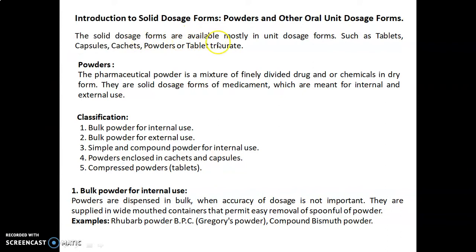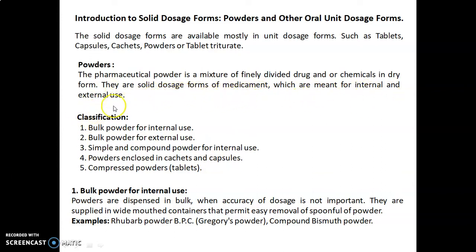The solid dosage forms are available mostly in unit dosage forms such as tablets, capsules, cachets, powders, or tablet triturates. A pharmaceutical powder is a mixture of finely divided drug and/or chemical in the dry form. They are solid dosage forms of medicament intended for internal and external use. Classification of powders includes: bulk powder for internal use, bulk powder for external use, simple and compound powder for internal use, powders enclosed in cachets and capsules, and compressed powders known as tablet triturates.